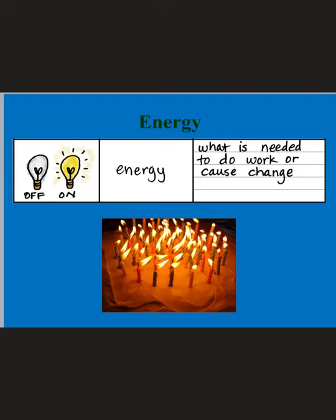Our first word is energy, and energy is what is needed to do work or cause change. You can see in the photo the candles are on fire, and that fire is causing change to the candle — the wax is melting, the wick is burning. You also see the light bulb turning on and off — that's also an example of energy, causing change from there being no light to there being light.